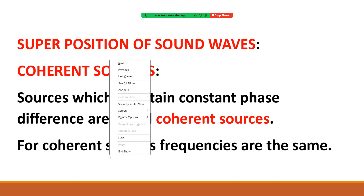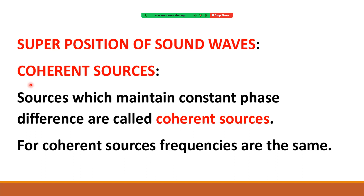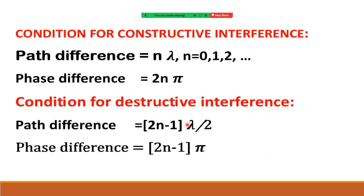Sources which maintain constant phase difference are called coherent sources, and for coherent sources frequencies must be the same. Condition for constructive interference: path difference = nλ, and in terms of phase, replacing λ with 2π since lambda corresponds to 2π phase. Condition for destructive interference: path difference = (2n−1)·λ/2, and in terms of phase, λ/2 corresponds to π phase.